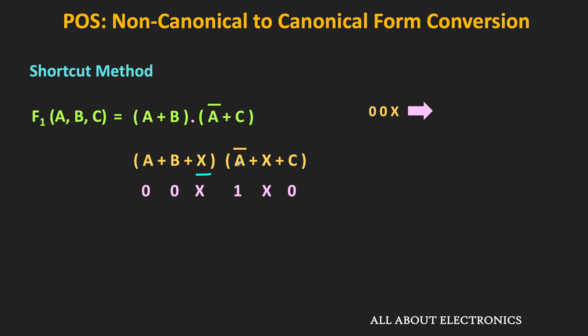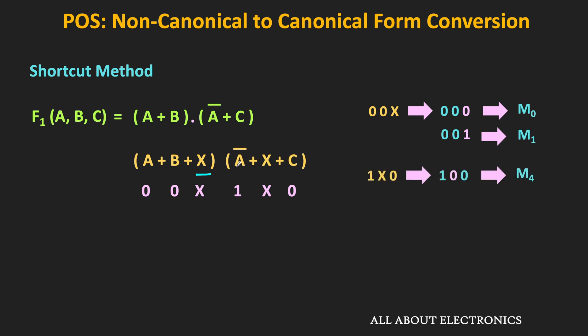For the first term 0·0·X: when X = 0 the corresponding maxterm is M0, and when X = 1 it is M4. For the second term 1·X·0: when X = 0 it gives M6, and when X = 1 it gives M4 — wait, M6 when X=1. After expansion, four maxterms total are present. In abbreviated form, this is the equivalent canonical POS form.